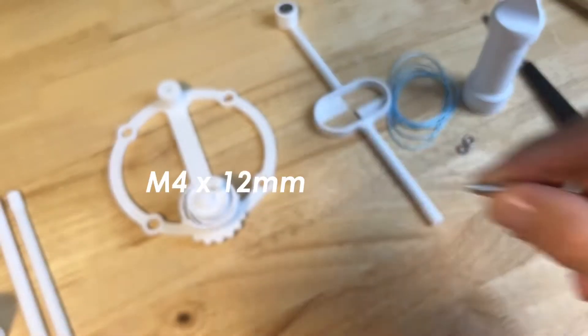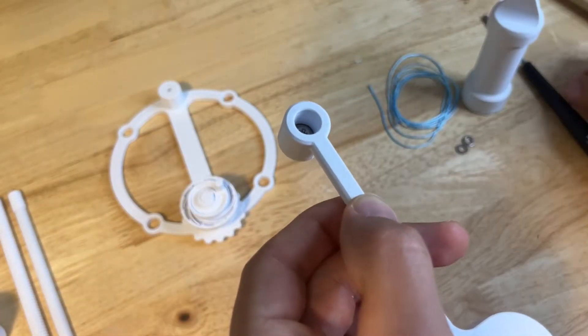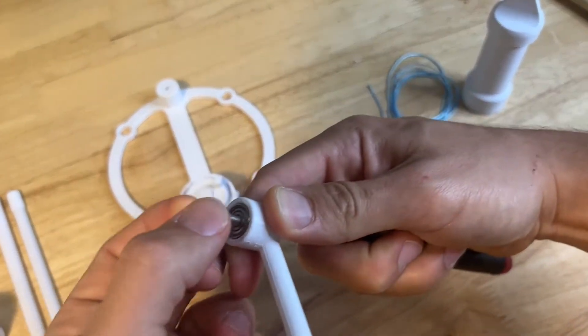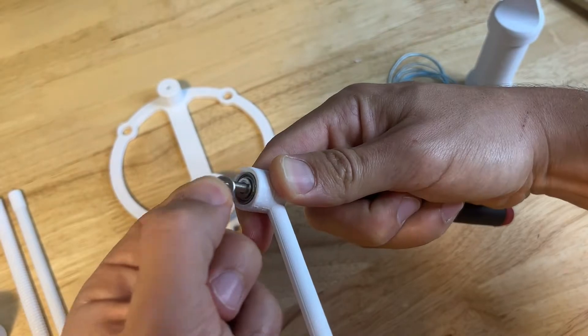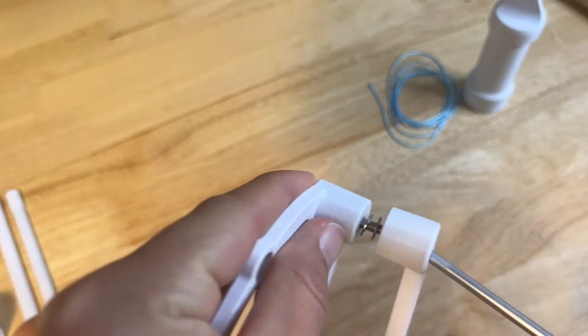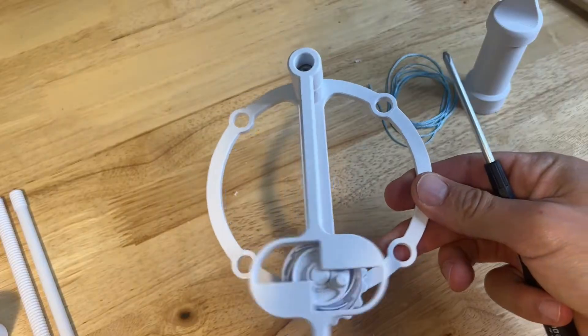Using an M4x12mm screw that goes in through the back of the pendulum, hold that in place with your screwdriver, throw two washers on the end of the screw, and then that will screw into the hole in the top of the base. Make sure everything swings freely.